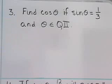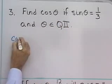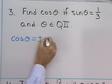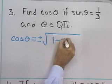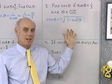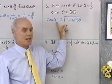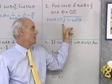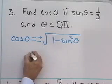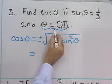Here's our next one: find cosine theta if sine theta is 1 third and theta terminates in quadrant 2. I have a Pythagorean identity that tells me I can find the cosine if I have the sine. Cosine of theta is equal to plus or minus the square root of 1 minus sine squared theta — that's an alternate form of the Pythagorean identity. The basic identity says sine squared plus cosine squared equals 1. Because theta terminates in quadrant 2, and cosine is negative there, I'll choose the negative square root.